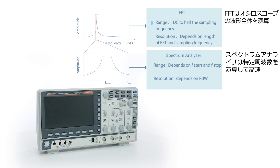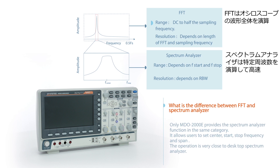Conventional DSO FFT always calculates the entire signal bandwidth up to half the sampling rate. This series allows users to analyze only the frequency domain of interest.